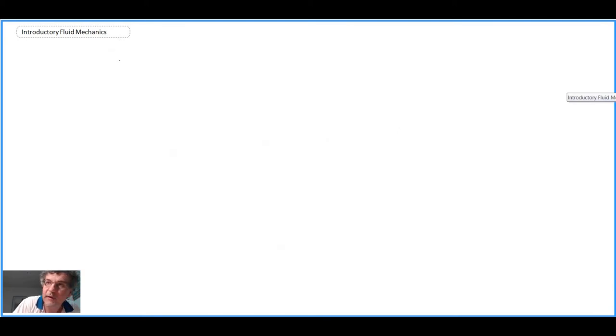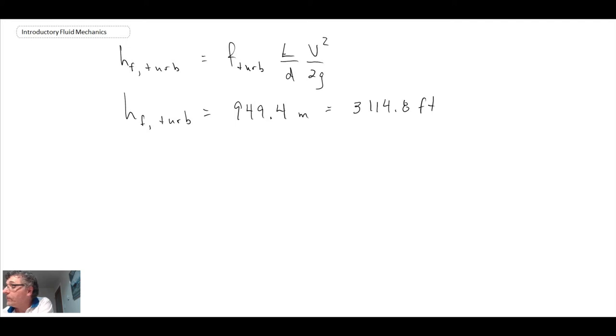Now that we've estimated the friction factor, we can go ahead and using the Darcy-Weisbach equation, we can estimate the head loss for turbulent flow. When we plug in the numbers and convert it to feet because that's what we were asked to do, there is one part of the answer. We were told to compute the head loss in feet and the pressure drop in psi. So this would give us the first half of the answer.